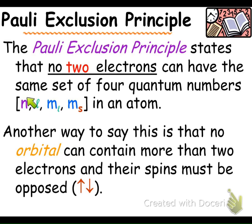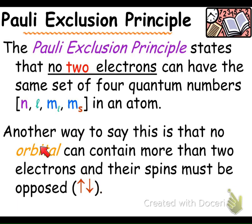Think of it like a street, an apartment building, a level, a floor, and then apartment A and apartment B. Two electrons can exist in the same orbital — say level two, floor two — but they're not existing in exactly the same space, and that's how we can have that up and down spin.